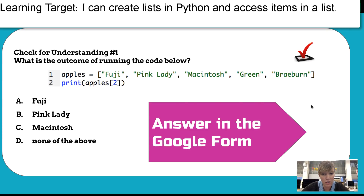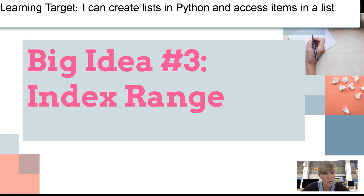This is the first check for understanding. You're going to answer in the Google Form on Google Classroom. What is the outcome of running this code? You have a list and a print statement — what do you think is going to happen? At the very end of the Google Form it will correct them all for you so you can check your responses. The third big idea is to get a range of items within a list printed out, and that's called index range.